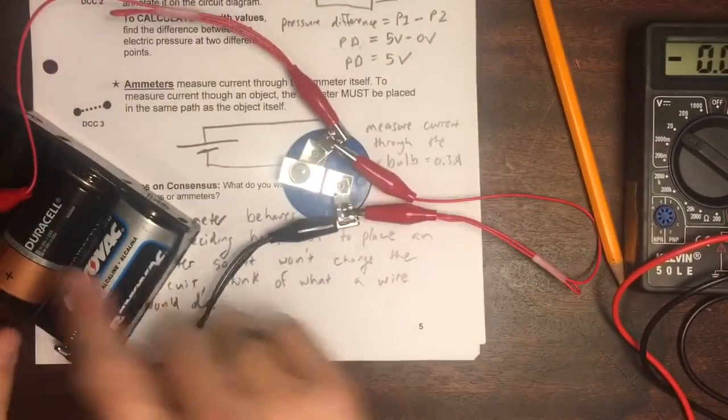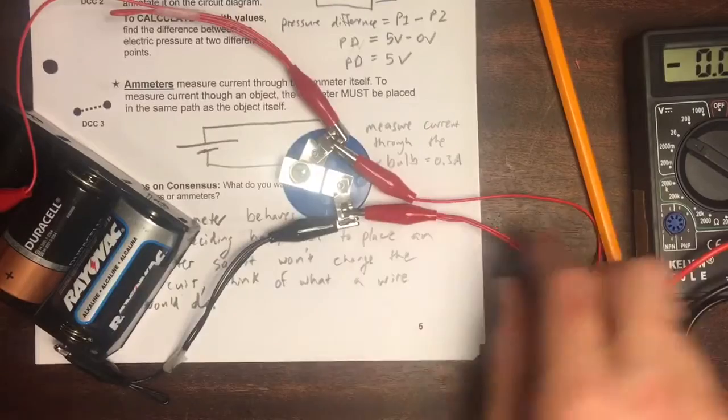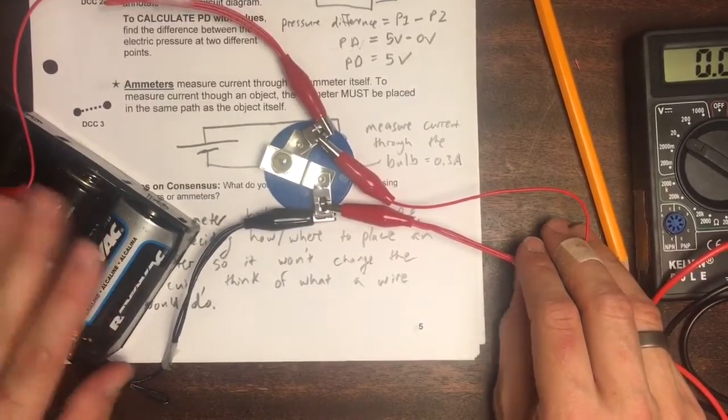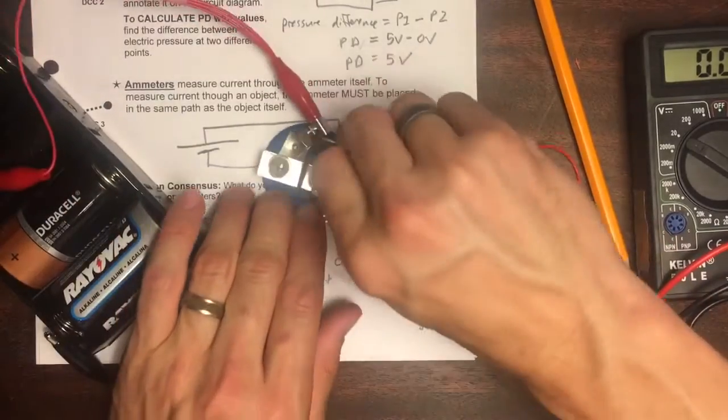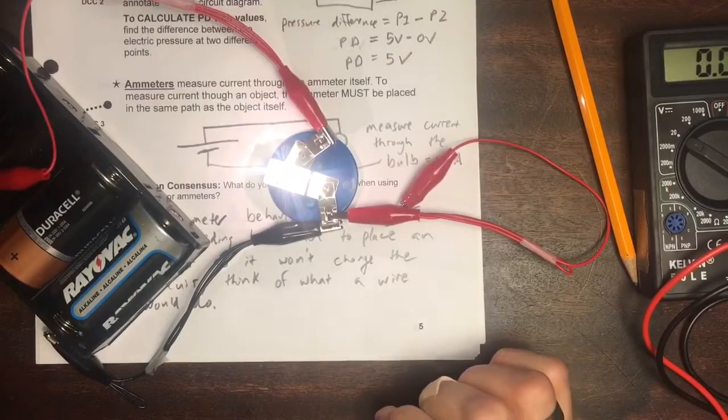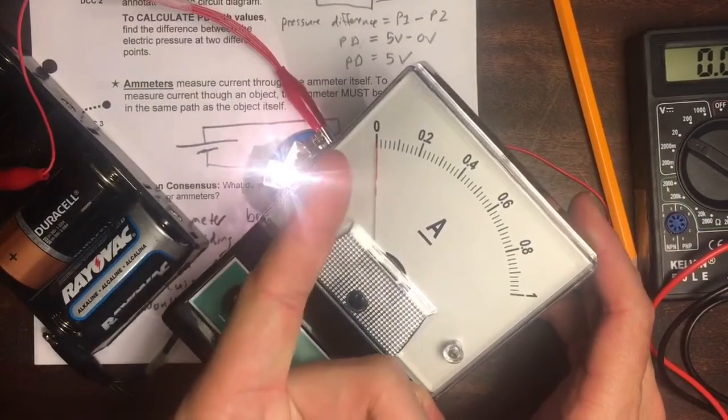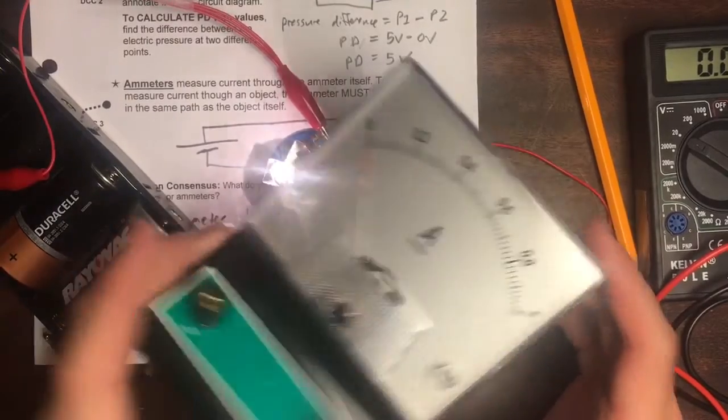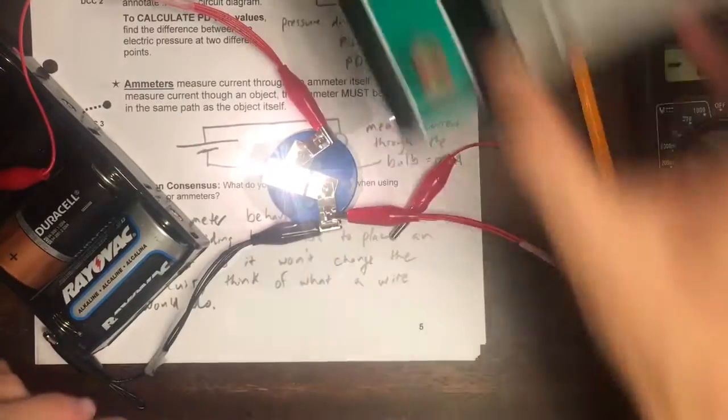You can see that there's no current going through this bulb at all. The reason is because we've created a short circuit that goes around the bulb. This wire is directly connecting one side of the battery to the other, and I can feel this is getting hot. That circuit is dangerous. I'm going to disconnect it because it's not safe. But if we were to connect that ammeter across that bulb, this needle would shoot way up, and then it wouldn't be useful anymore. Something inside the ammeter would break, and it wouldn't make useful measurements after that.